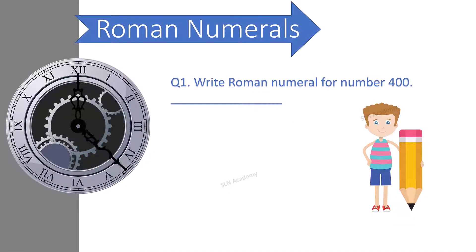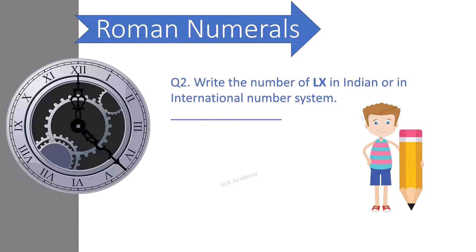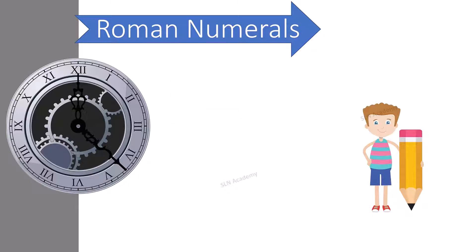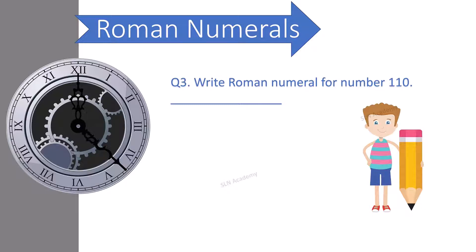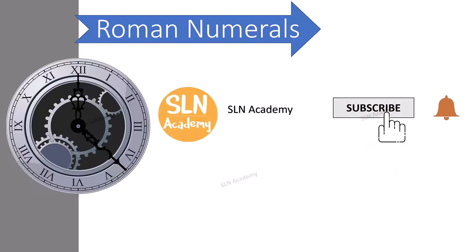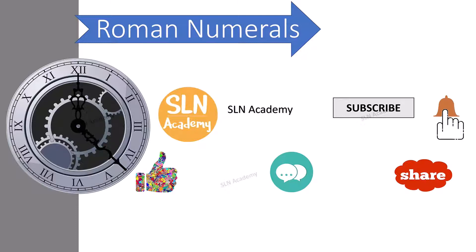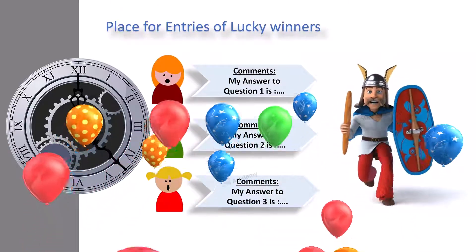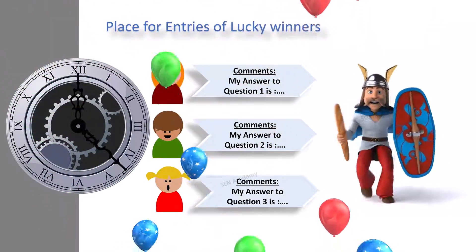Now it's question time! Question 1: Write the Roman numeral for 400. Question 2: Write the number represented by LX in the Indian or international number system. Question 3: Write the Roman numeral for 110. Write your answers in the comments section below and you could be the winner of the episode. If you like our videos, hit the like and subscribe button. Check the description box for more video links.